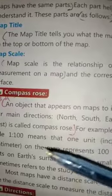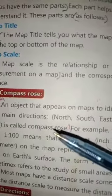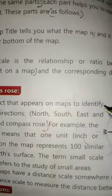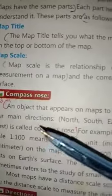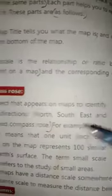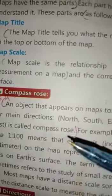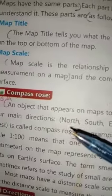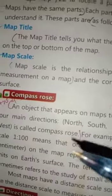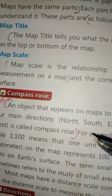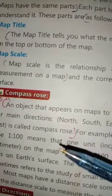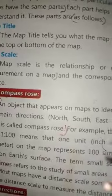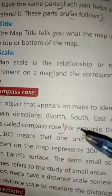An object that appears on maps to identify the four main directions — North, South, East, and West — is called a Compass Rose. It shows four important directions.